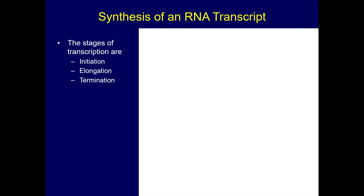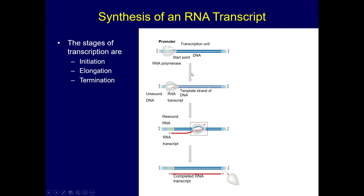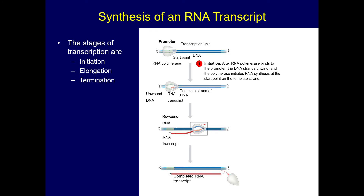The stages of transcription are initiation, elongation, and termination. At the beginning, we go to the DNA where there's a promoter, and the strands are separated so we can make our RNA. One side of the DNA is called the template, and RNA is built off of that template, moving along until we have a long section of RNA — our completed RNA transcript. Initiation is the part where we bind the promoter and start making our strand.